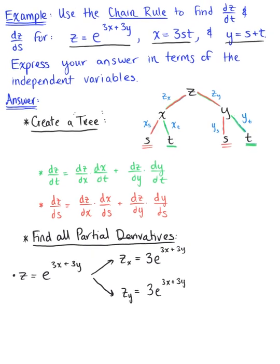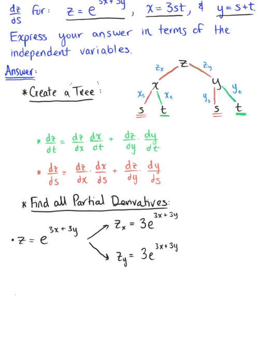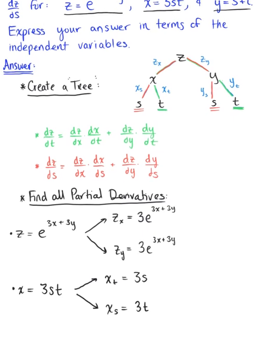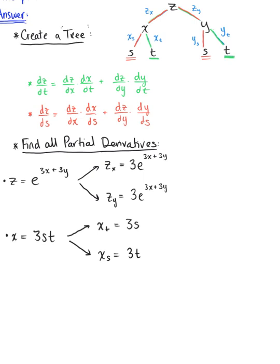Now we find the partial derivatives for x and y. We are given that x equals 3st. The partial derivative of x with respect to t is 3s, and the partial derivative of x with respect to s is 3t. We are also given that y equals t plus s, so the partial derivative of y with respect to t is 1, and the partial derivative of y with respect to s is also 1.